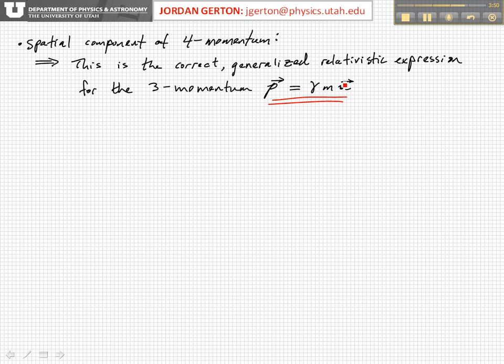So little p is equal to gamma m little u. Again, little u is a three velocity, not the four velocity. And so we see that it's related to the three momentum, the classical three momentum, except that it's just multiplied by the Lorentz factor, gamma.